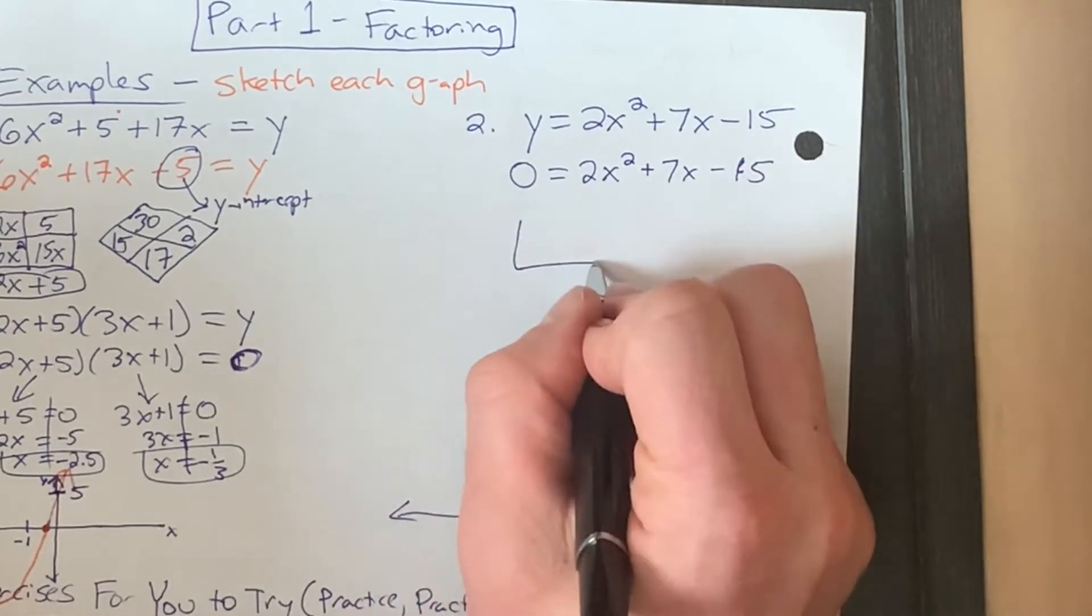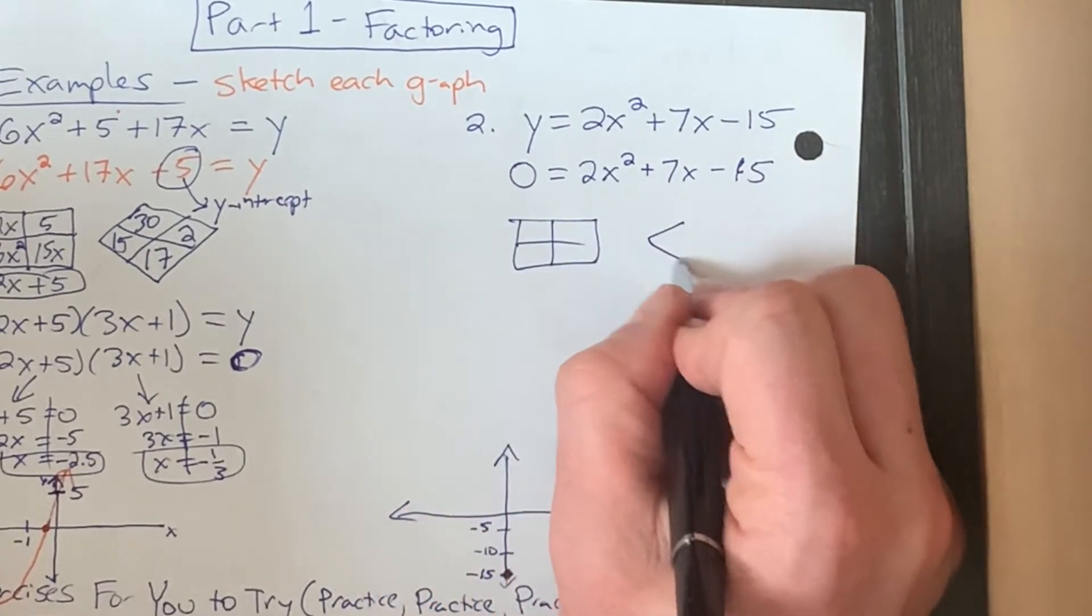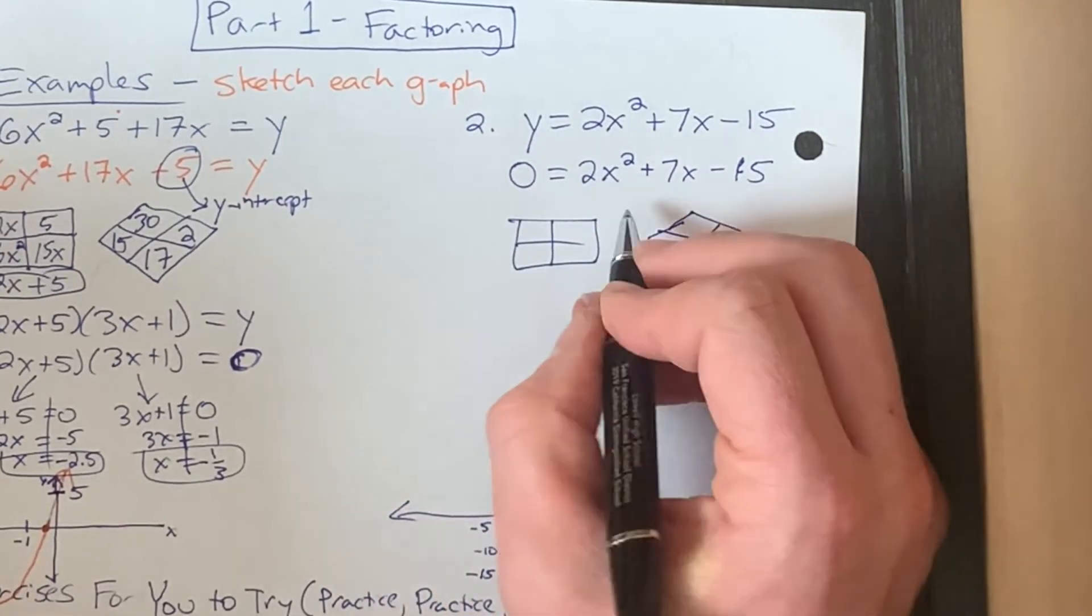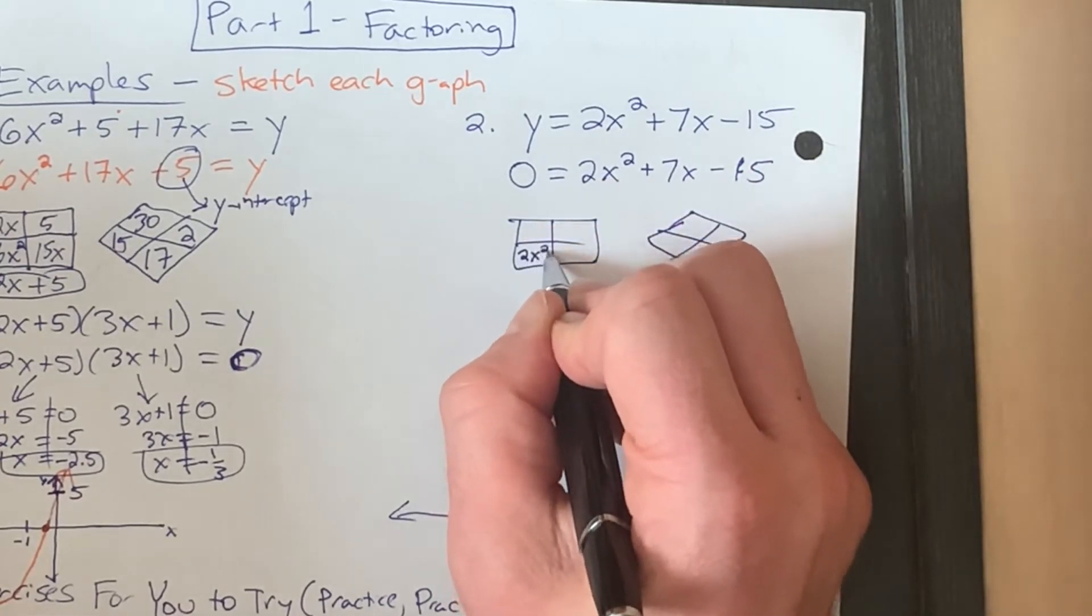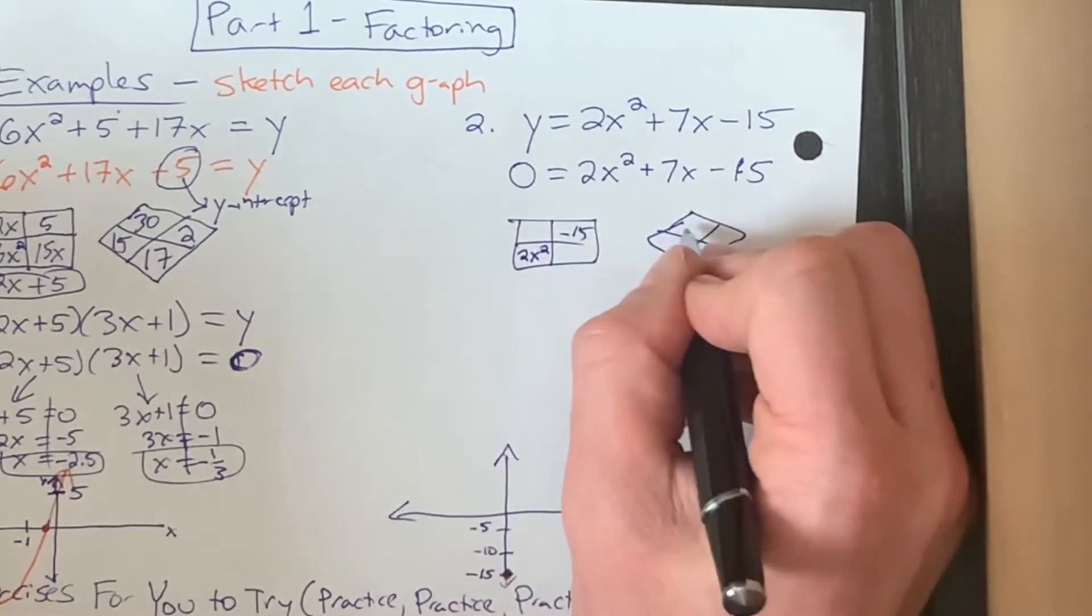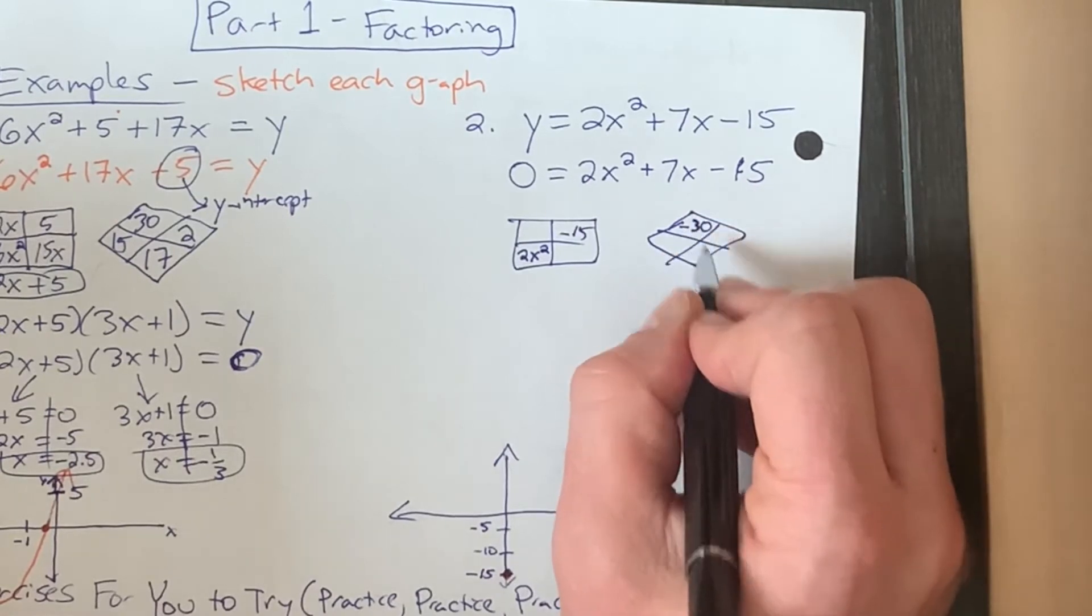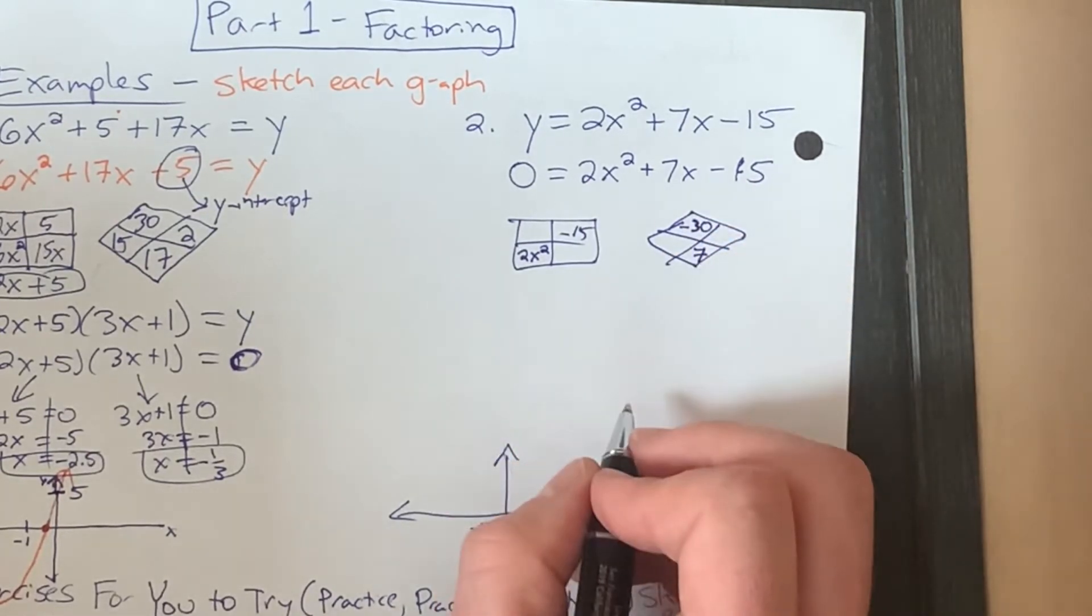Now we're gonna factor. Generic rectangle, diamond, because our a here is not one. There is not really a great way to do this in your head.